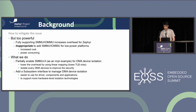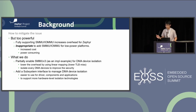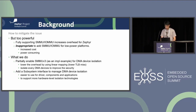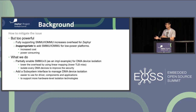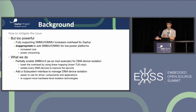Fully supporting SMMU in Zephyr would introduce too much overhead, because our goal is just to restrict DMA devices, not to enable virtualization features. It is also inappropriate to introduce SMMU to low power platforms due to power consumption and cost issues. To address the first concern, we partially enable the SMMU — for example, by using linear address mapping — which allows SMMU to reduce unnecessary overhead. For the second concern, we add a subsystem to manage DMA device isolation, with an interface that allows drivers to uniformly access the SMMU driver or other similar technologies.